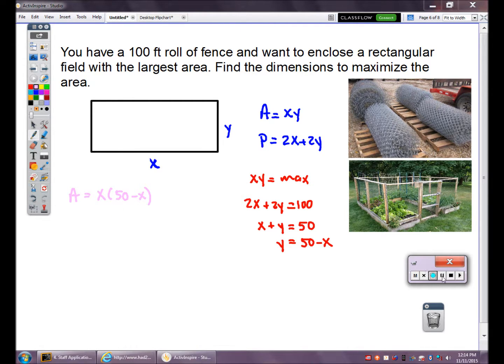I'm going to find the derivative of this pink equation. A prime. You could do the product rule here, but I think it's easier to distribute the X into the parentheses. 50X minus X squared. Now take the derivative using the power rule. A prime is 50 minus 2X. Set this equation equal to zero. Zero equals 50 minus 2X. Subtract 50, divide by negative 2. X equals 25.